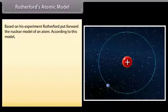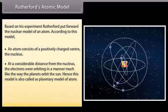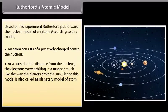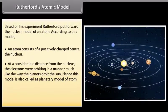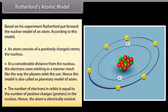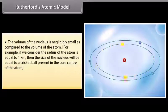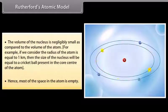Based on his experiment, Rutherford put forward the nuclear model of an atom. According to this model, an atom consists of a positively charged center — the nucleus. At a considerable distance from the nucleus, electrons orbit in a manner much like the way planets orbit the sun. Hence, this model is also called the planetary model of the atom. The number of electrons in orbits equals the number of protons in the nucleus, so the atom is electrically neutral. The volume of the nucleus is negligibly small compared to the volume of the atom — if the atom's radius were 1 km, the nucleus would be the size of a cricket ball at its center. Hence, most of the space in the atom is empty.